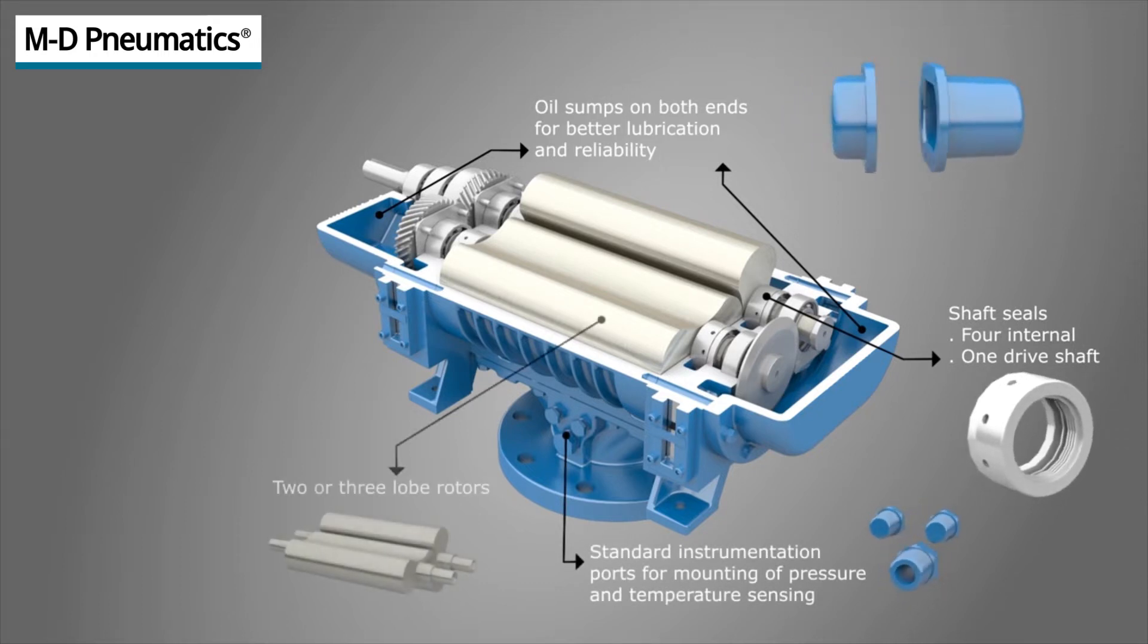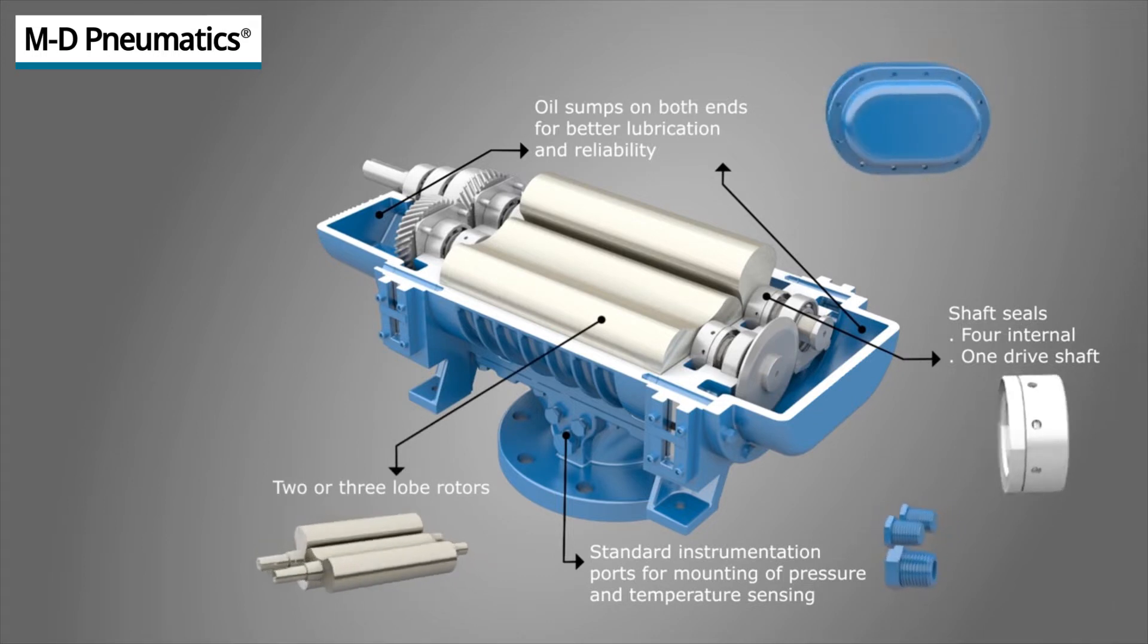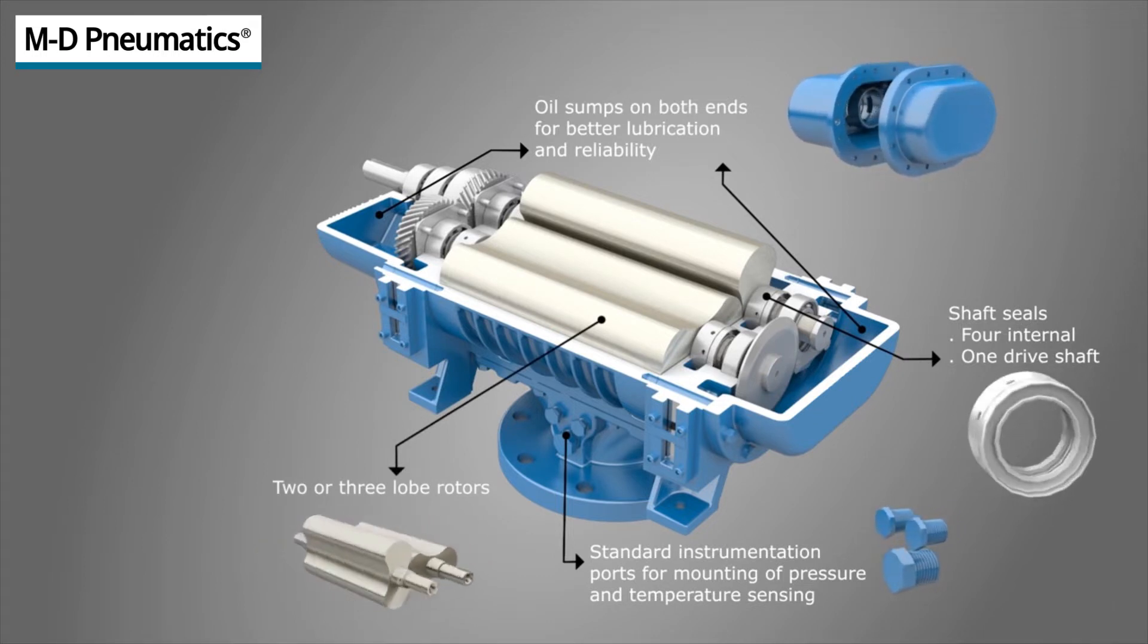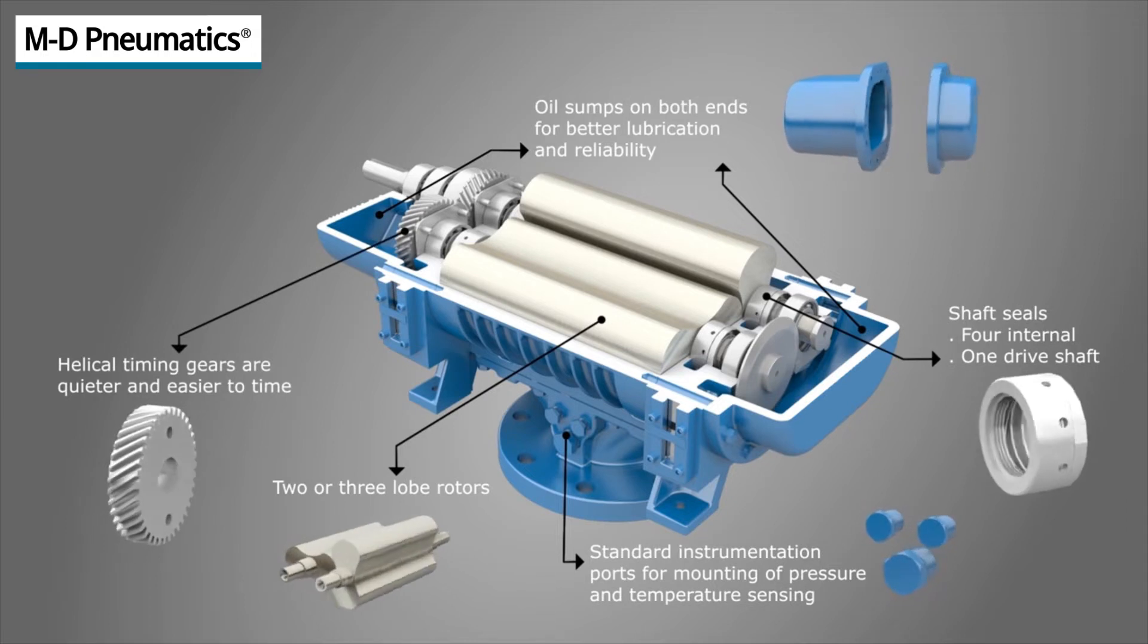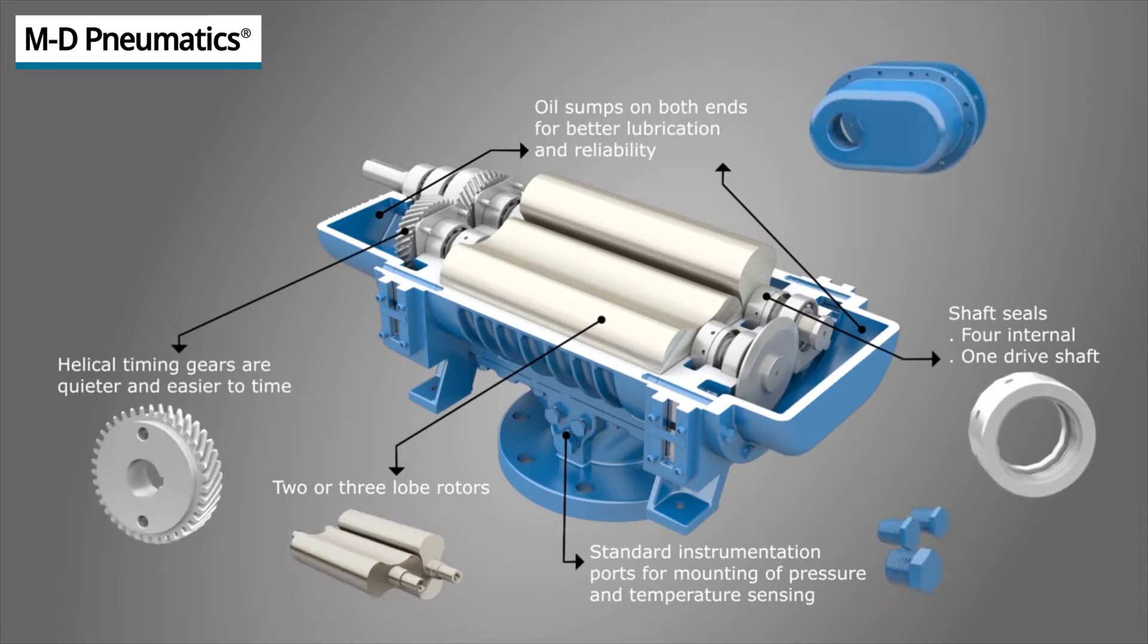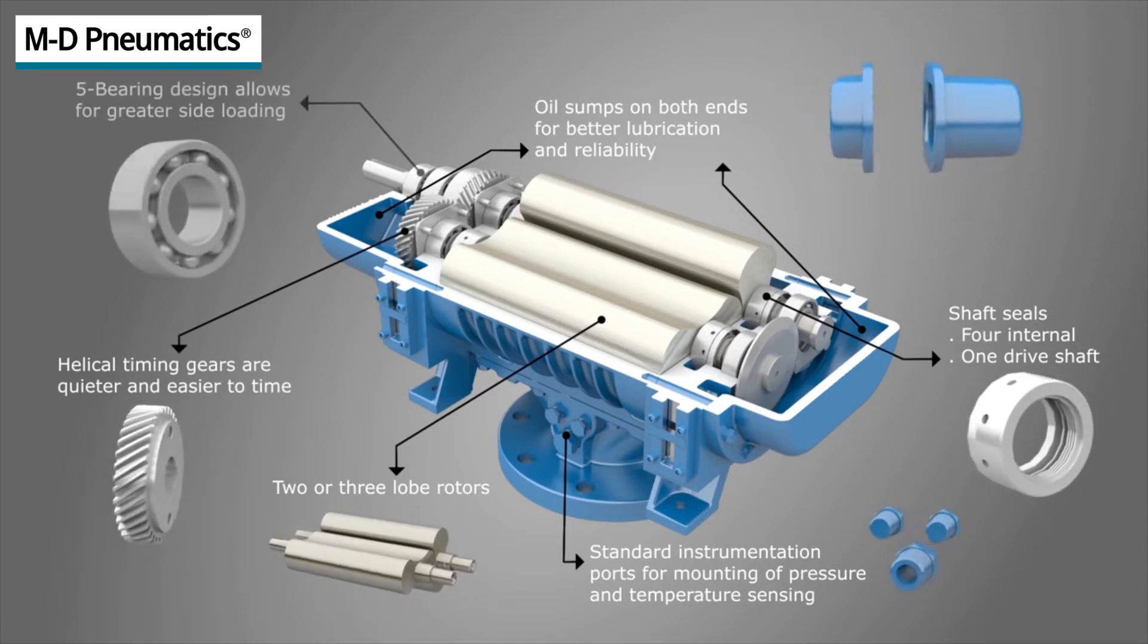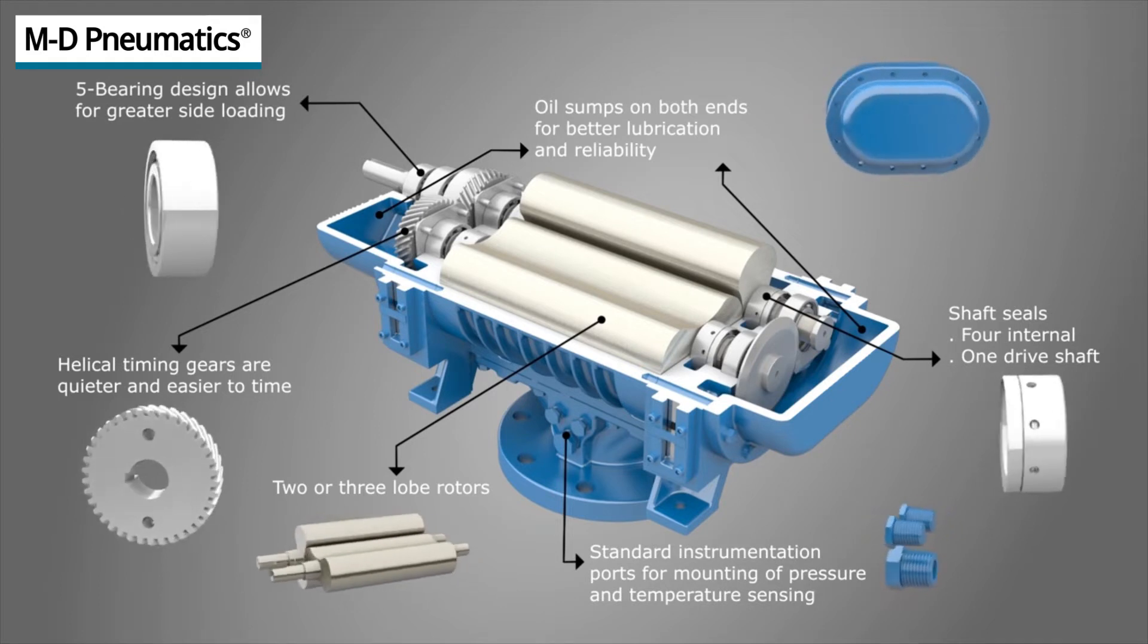Optional three-lobe rotor design provides lower pulsation and quieter operation, helical gears are used for more precise timing, and a five-bearing design allows for greater side loading.